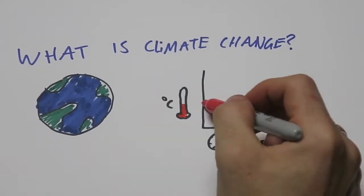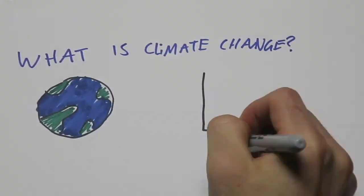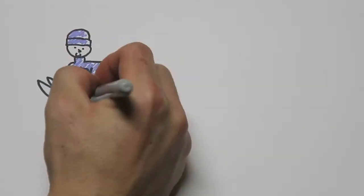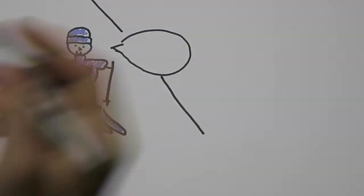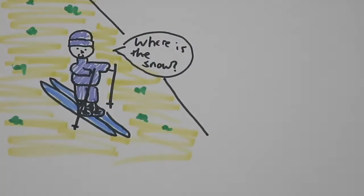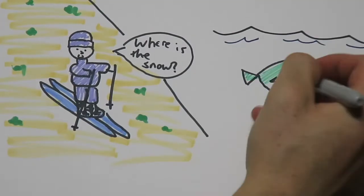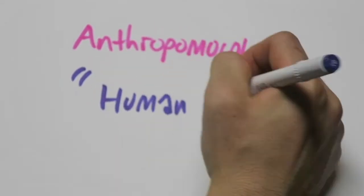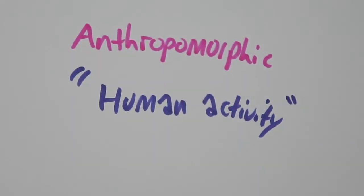While the figure itself may not seem significant, the consequences it equates to definitely are. The atmosphere and ocean have warmed, the amounts of snow and ice have diminished, and sea level has risen, having widespread impacts on human and natural systems. The cause of this rapid change has been attributed to anthropomorphic activity, and is the process that we refer to as climate change.